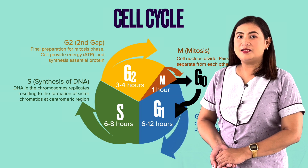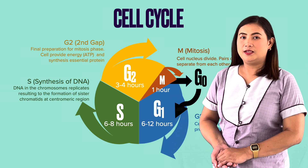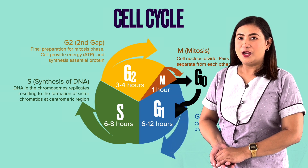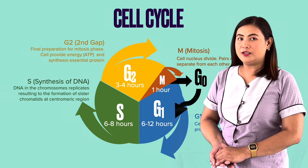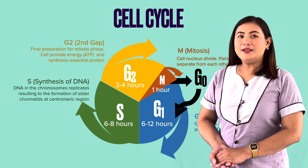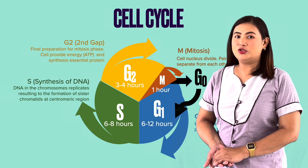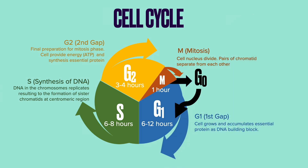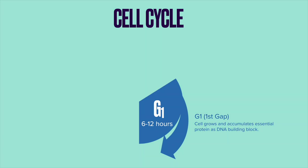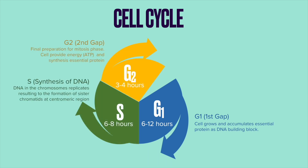Do you know what the cell cycle is? A cell cycle is a series of events that take place in a cell as it grows and divides. It is the process where the cell undertakes to replicate all of its genetic materials, then divide into two identical cells. There is a four-stage process in the cell cycle consisting of the G1 phase, the S (synthesis) phase, the G2 phase, and mitosis.